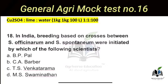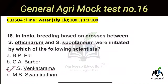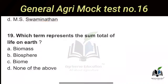The 18th question: In India, breeding based on crosses between Saccharum officinarum and Saccharum spontaneum was initiated by which scientist? The right answer is Option C — T.S. Venkat Raman. So T.S. Venkat Raman is responsible for the breeding program between Saccharum officinarum and Saccharum spontaneum.